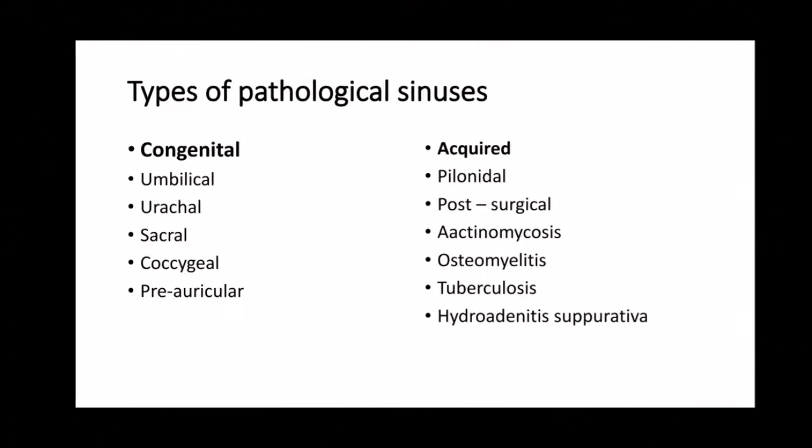Pathological sinuses are of two types: congenital and acquired. Examples of congenital sinuses include umbilical sinus, urachal sinus, sacral sinus, coccygeal sinus, and preauricular sinus.